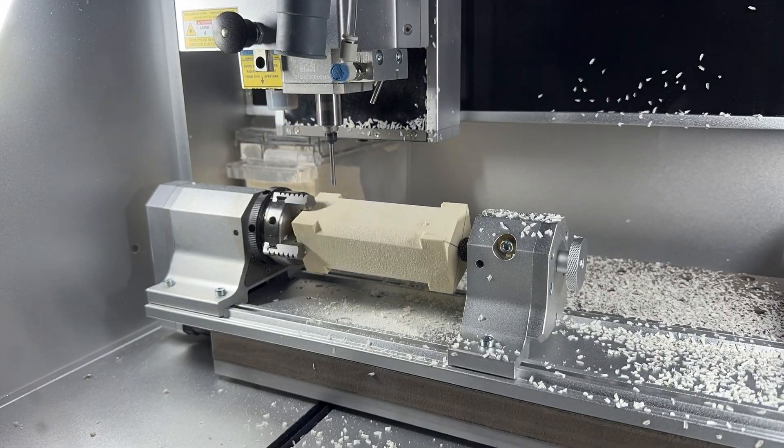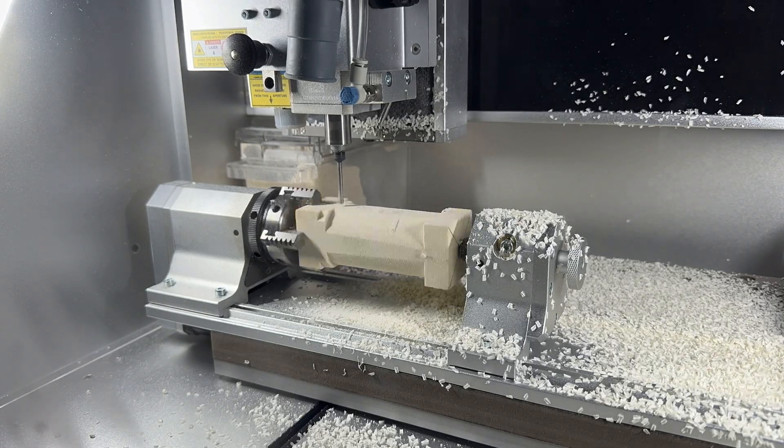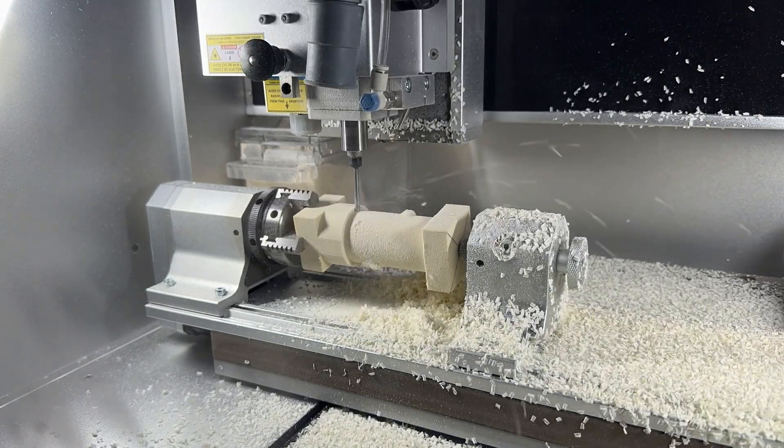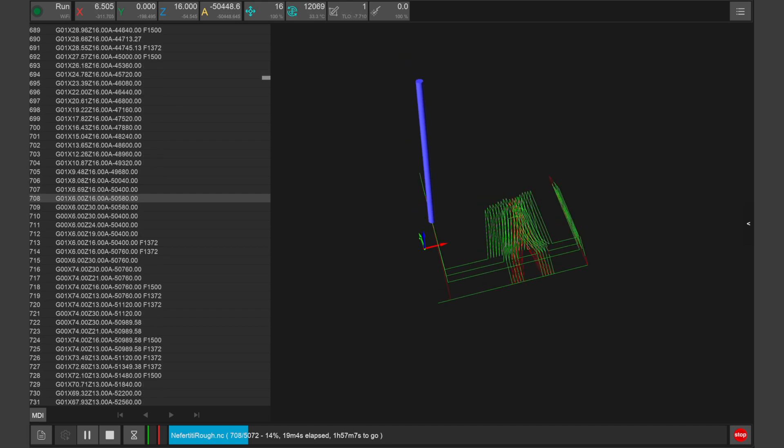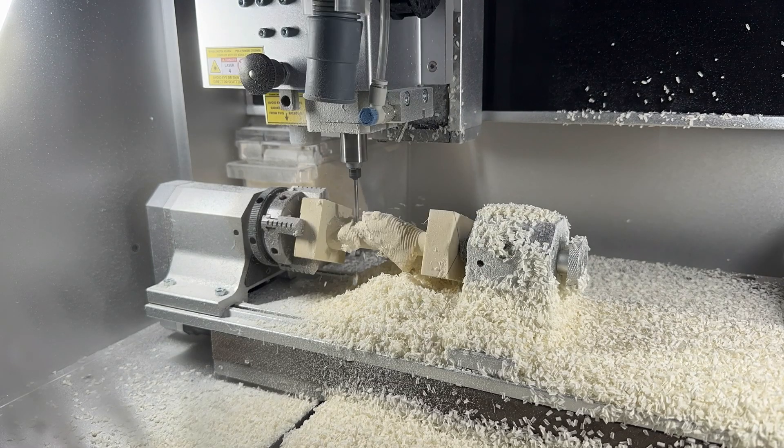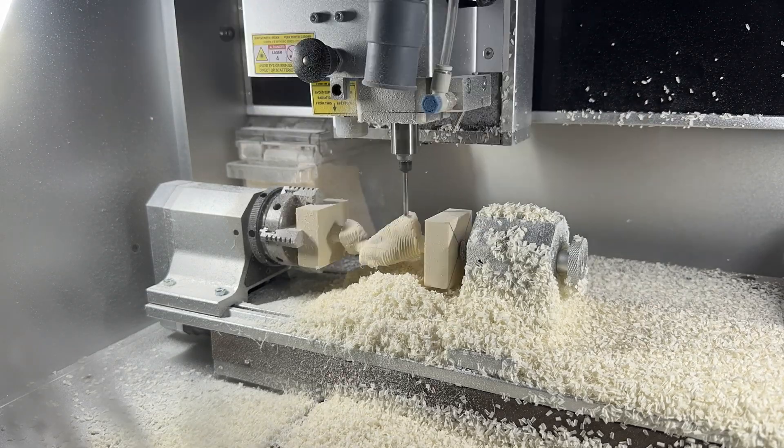The machine will start by roughing the stock using the 25 millimeter bit in tool one while automatically rotating the fourth axis module during manufacturing. You can monitor the progress of the machine in the Carvera controller app during the manufacturing process. Machine time for the roughing job will be approximately 50 minutes.